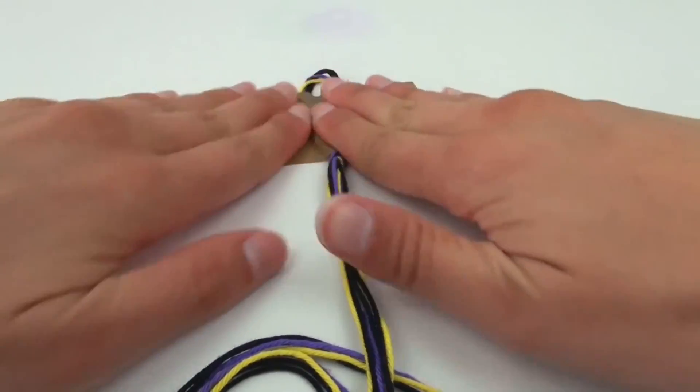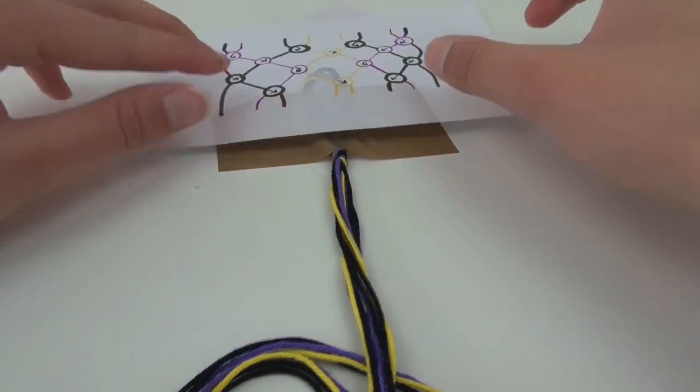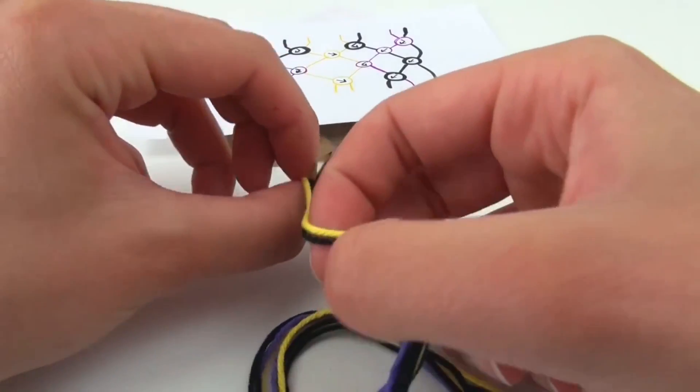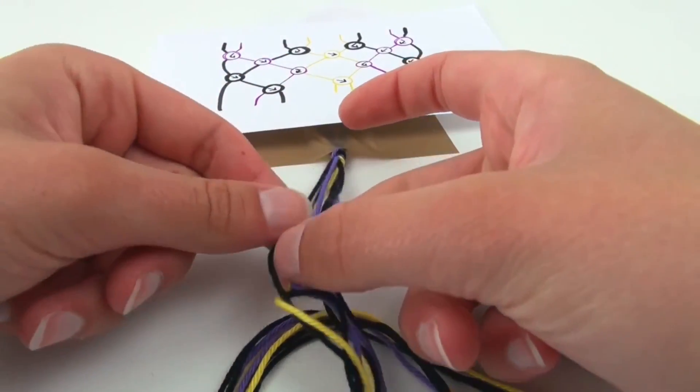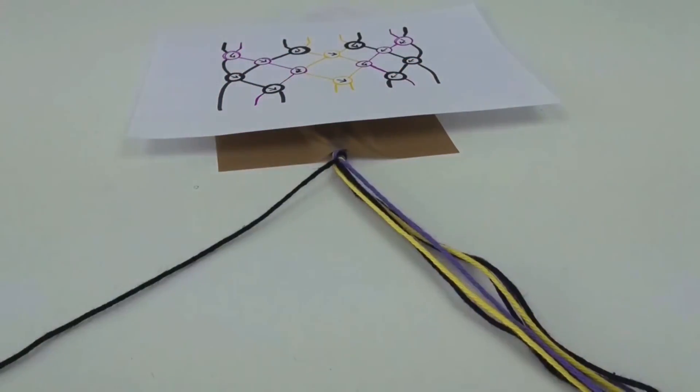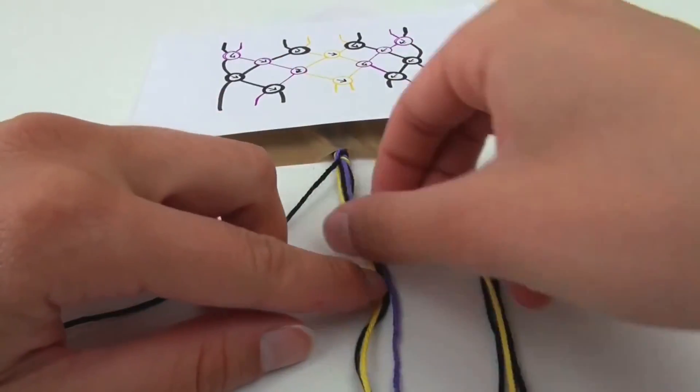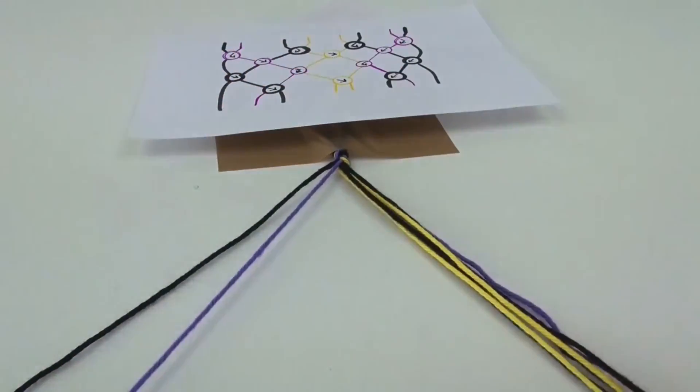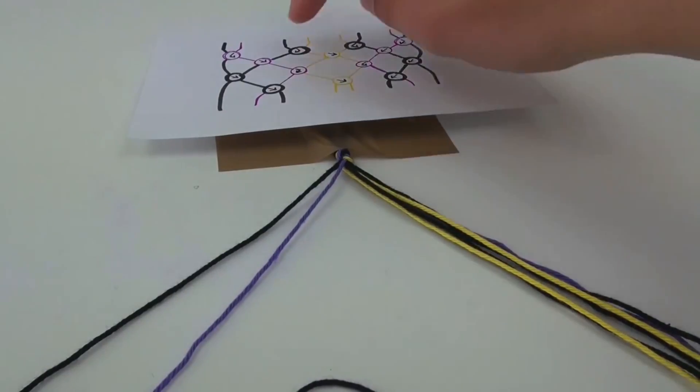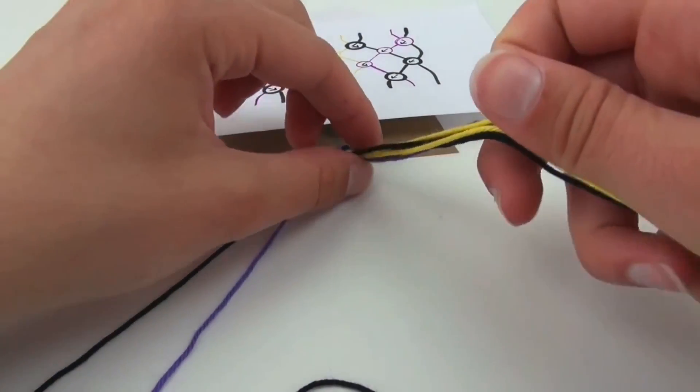All right, that's all done with the tape and we'll start. At first I start with a black string, then with a purple one, and a black one.